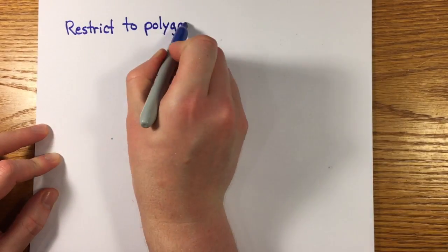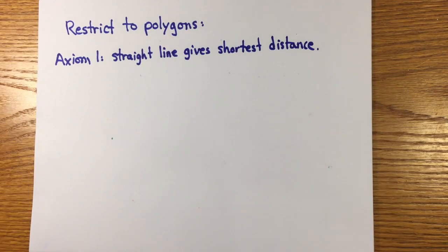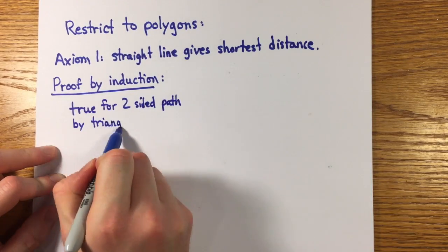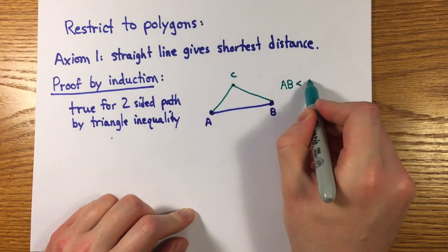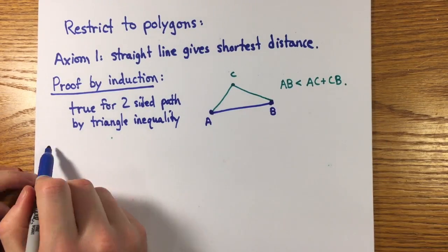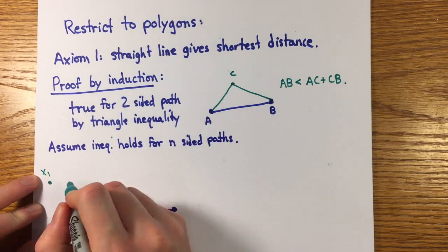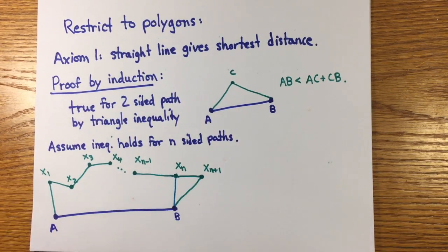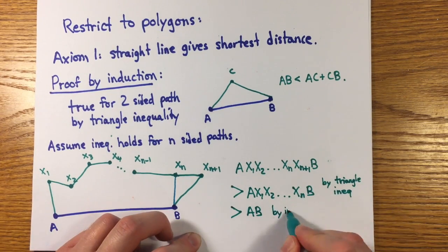It should be noted that if we restrict to polygons, both axioms are not hard to prove. For the first statement, that the straight line gives the shortest distance along any polygonal curve between the points, the proof is a simple induction. The base case, comparing a line to two lines, is just a triangle inequality. If true for any polygonal path of n segments, then by the triangle inequality again, the length of an n plus 1 segment chain is longer than an n segment one, which is already longer than the straight line.